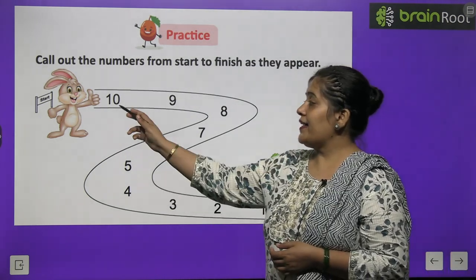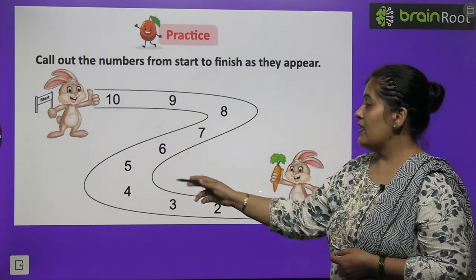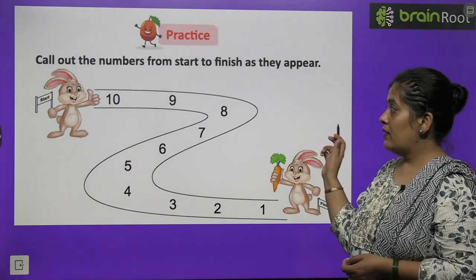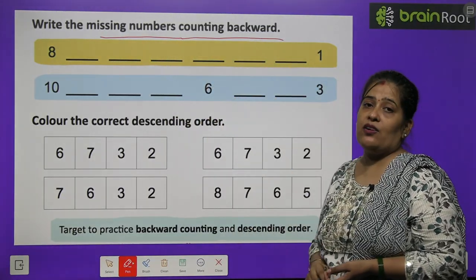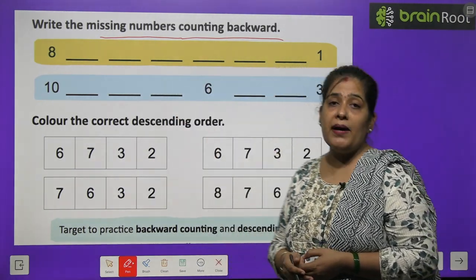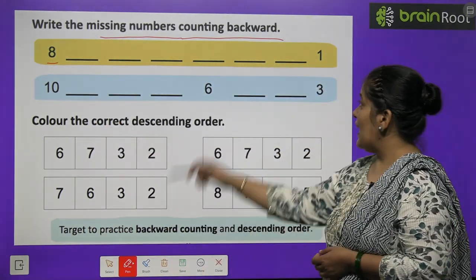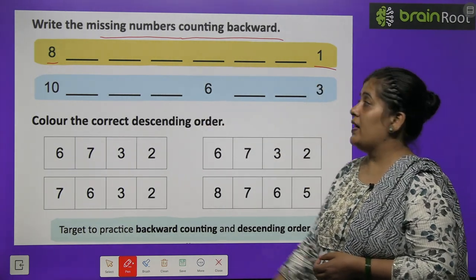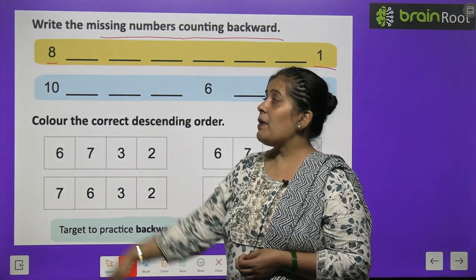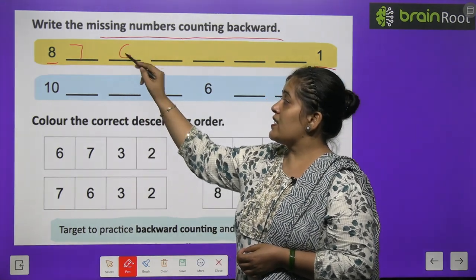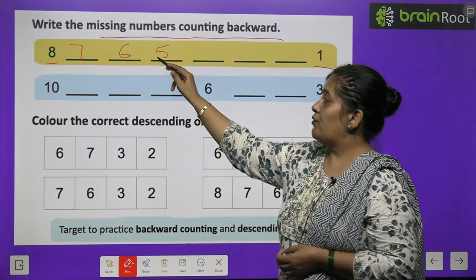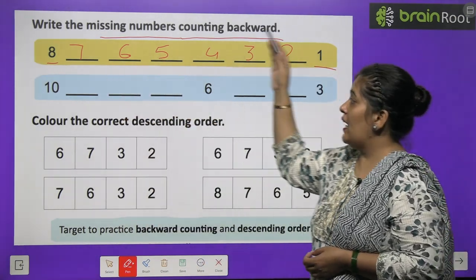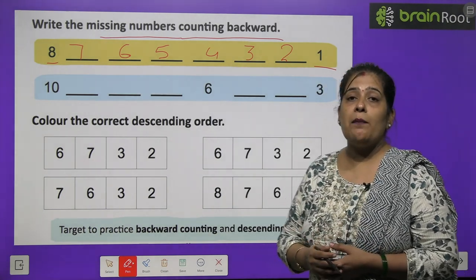Once again we will read: 10, 9, 8, 7, 6, 5, 4, 3, 2, and the last number is number 1. Write the missing numbers counting backwards. The first number is number 8 and the last number is number 1. Aapko 8 se lekar 1 ke beech ke saare missing numbers likhne hain. So: 8, 7, 6, 5, 4, 3, 2, and then 1.